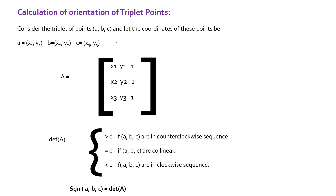In order to calculate the MPP algorithm, we need to consider the calculation of orientation of triplet points. Consider three points A, B, C with coordinates X1, Y1; X2, Y2; and X3, Y3 respectively. We construct a matrix A which consists of the coordinates of points A, B, C along with 1s. The determinant of A will be greater than 0 if A, B, C are in counterclockwise sequence; equal to 0 if A, B, C are collinear; and less than 0 if A, B, C are in clockwise sequence. For computational purposes, we represent det(A) as sign(ABC).